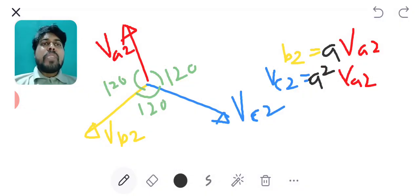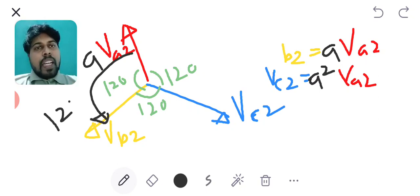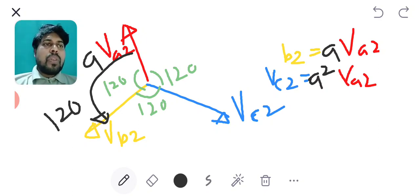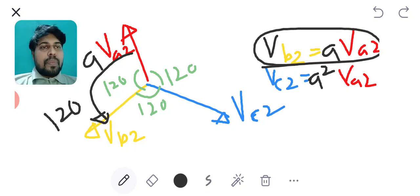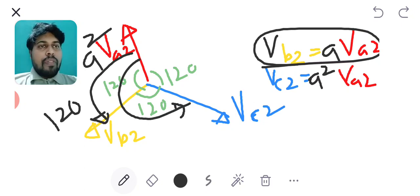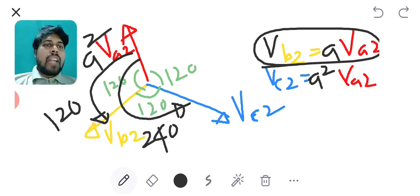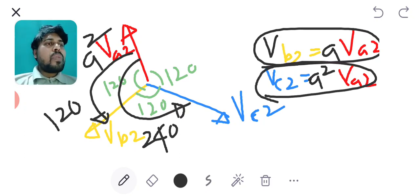If we observe the negative symmetrical components I can express Vc2 as well as Vb2 in terms of Va2 by the use of A operator. If I multiply by A² phasor Va2 that will take a rotation of 120 degrees and it will reach the position of Vc2 and hence I can write Vc2 as A² Va2.